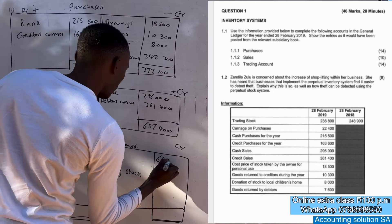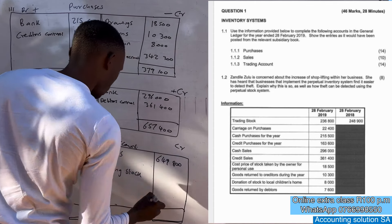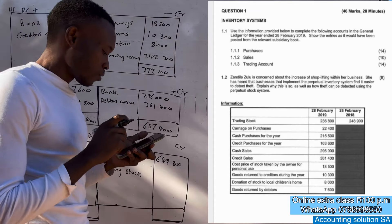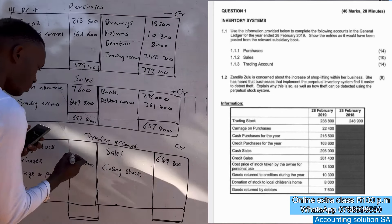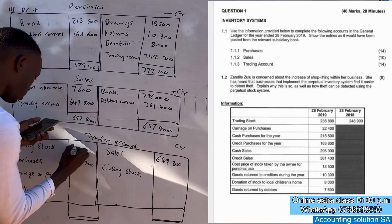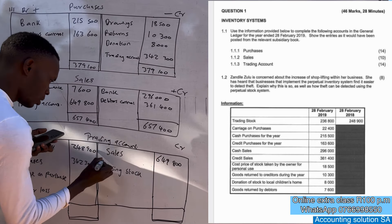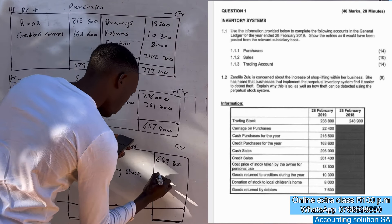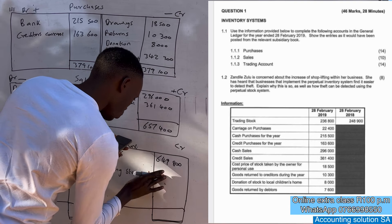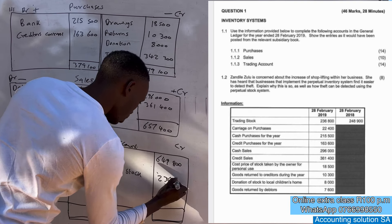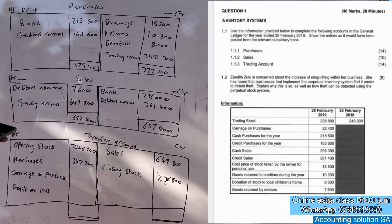Remember we have opening balance and closing balance that we have for trading stock, copy and paste. Opening it was 2018, 248,900 and closing it was 2020, not 32, 368,800. Then carriage and paste it was given 22,400.